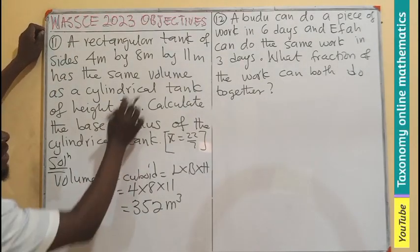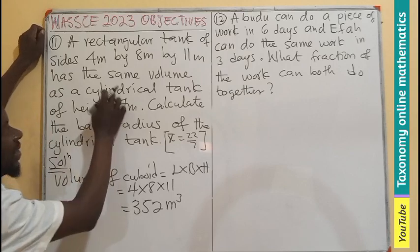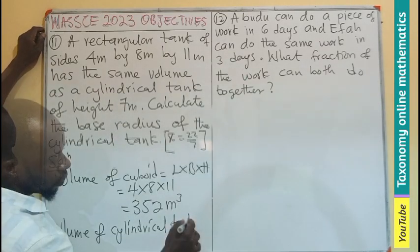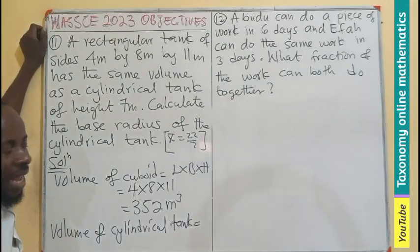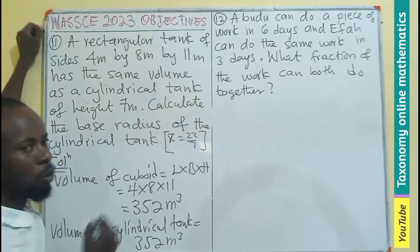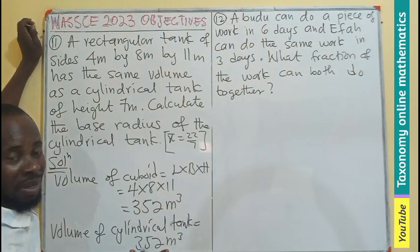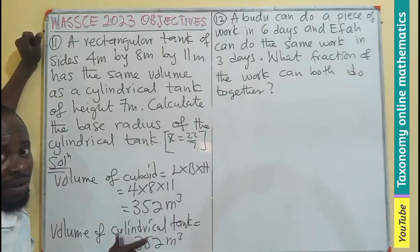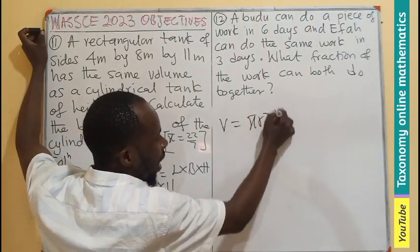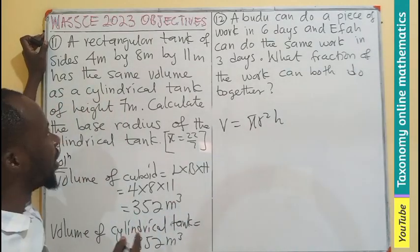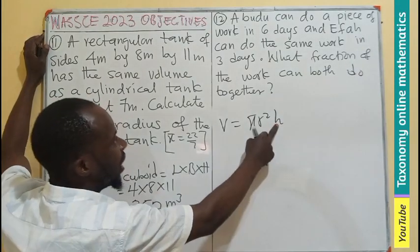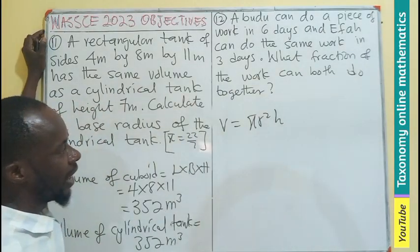Since the volume of the cuboid is the same as the volume of the cylindrical tank, the volume of the cylindrical tank will also be 352 meter cube. The formula for finding the volume of a cylinder is given by πr²h, where r is the radius that we are asked to find and h is the height of the cylinder.